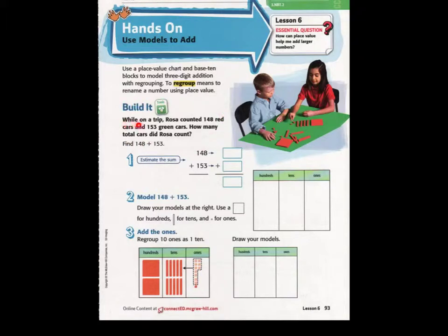We are going to start with this problem right here to give it a little practice shot. While on a trip, Rosa counted 148 red cars and 153 green cars. How many total cars did Rosa count? The first thing we want to do is take this addition problem and come up with an estimated sum. We are going to estimate the sum by rounding 148 to the nearest 10. 148 to the nearest 10 rounds to 150, and 153 to the nearest 10 rounds to 150.